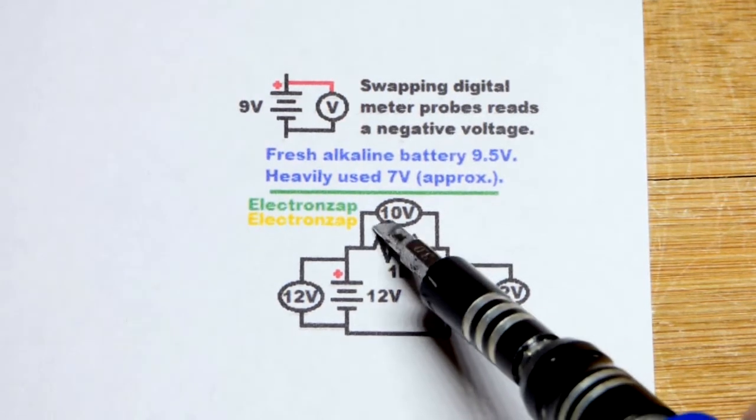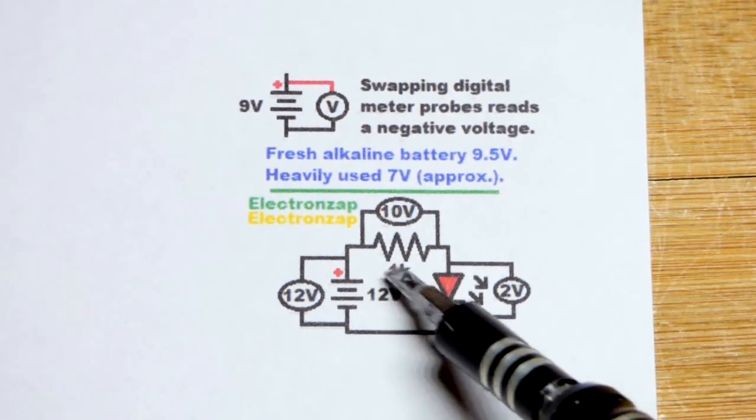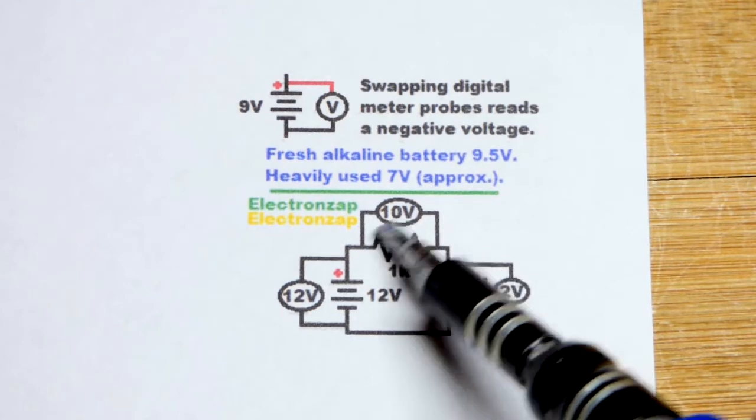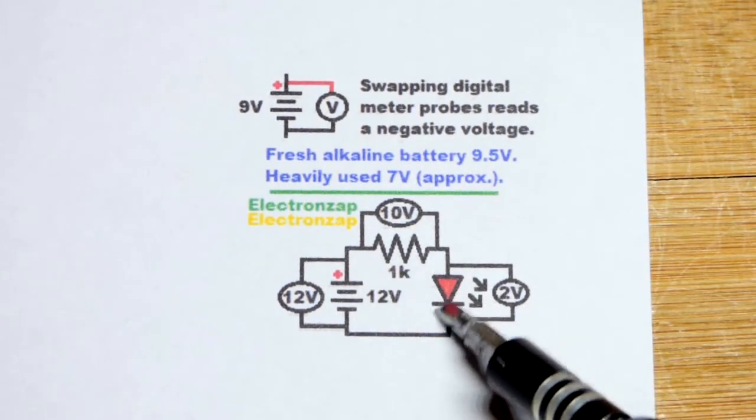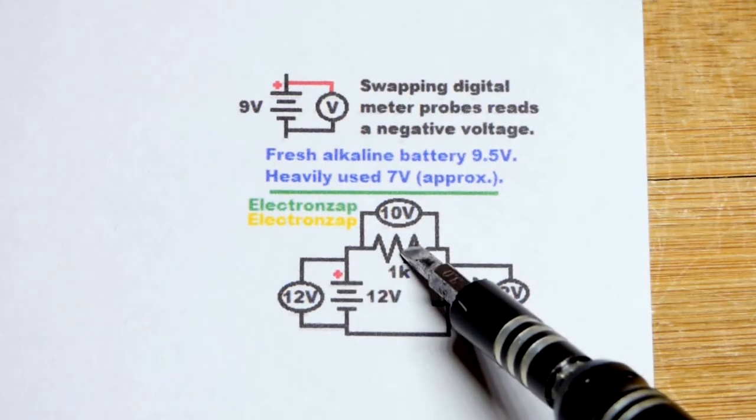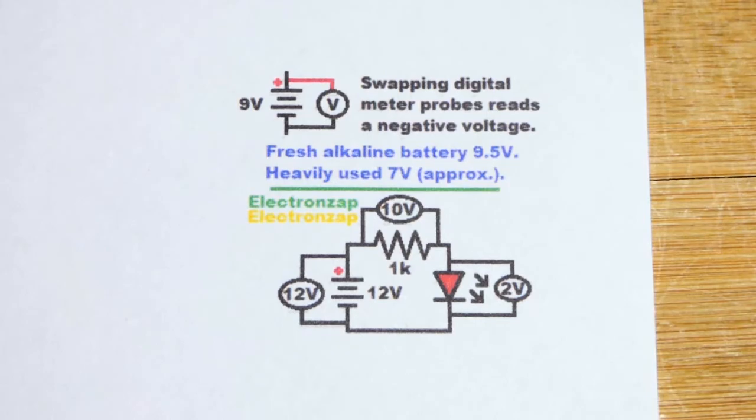So in any case that'll leave about 10 volts across the resistor. That's important because if we know the value of the resistor the voltage across it we know the amount of current that's flowing through it. The resistor is what is setting the current in this circuit based on its resistance and the voltage across it.